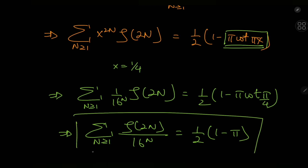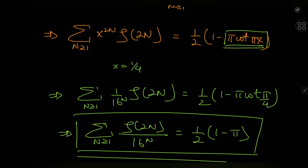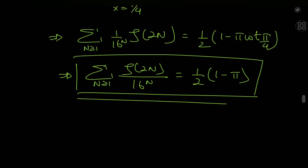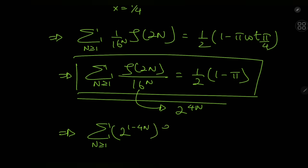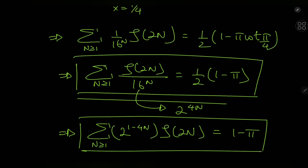This is a beautiful result that's actually quite unexpected. You've got the zeta function up there, a factor of 16 in the denominator, and on the right-hand side something so simplistically beautiful: (1 − π)/2. Writing 16^n as 2^(4n) and multiplying by 2, we can also express this as the sum over positive integers n of 2^(1−4n)·ζ(2n) equals 1 minus π. That's a pretty beautiful result indeed.